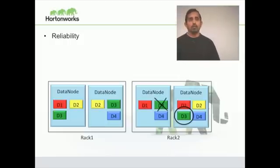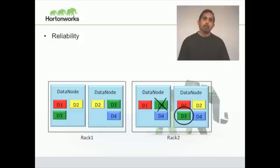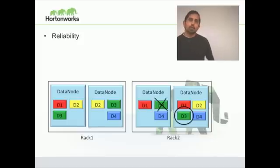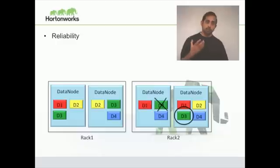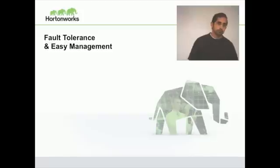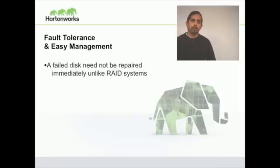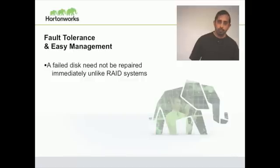In a study we did in a large cluster, we observed loss of 19 replicas out of 329 million replicas. This is equivalent to 7 nines of reliability. And even the 19 replicas that we lost, we fixed those bugs and even those should not occur. So given this active replica management, a failed disk need not be repaired immediately unlike some of the systems that use RAID for the reliability of data. Also, failed nodes need not be repaired immediately.